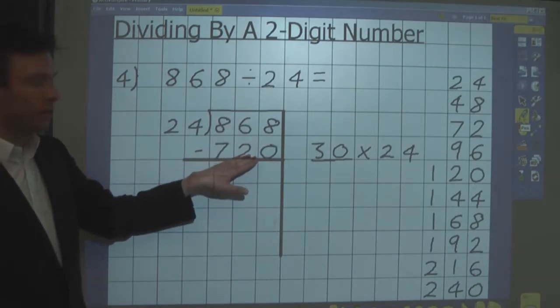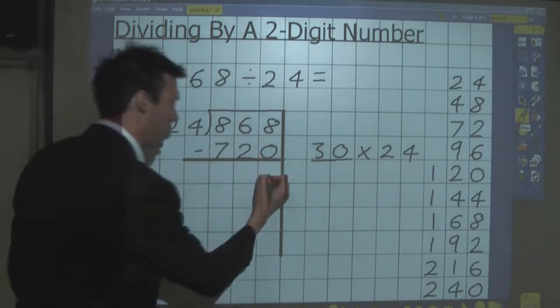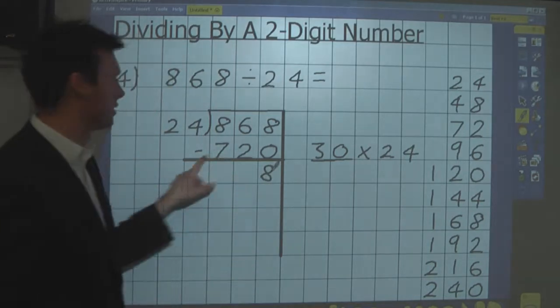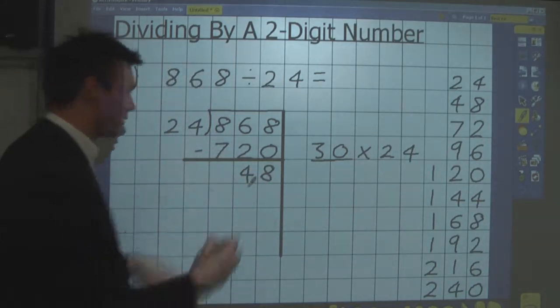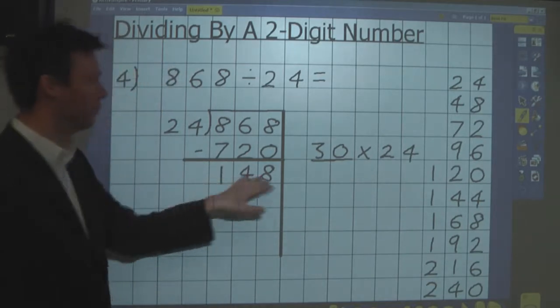Then we subtract this number from this one. 8 take away 0 is 8, 6 tens take away 2 tens, 4 tens, 800 take away 700 is 100, we're left with 148.